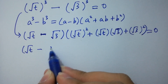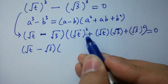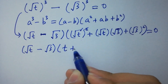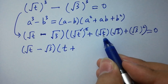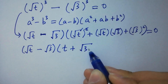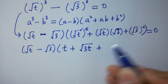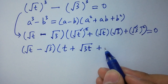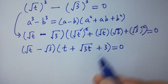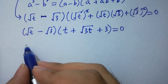Applying the difference of cubes factoring, we get: square root of t minus square root of 3, times the quantity t plus square root of 3t plus 3, equals 0. So we have two cases here.